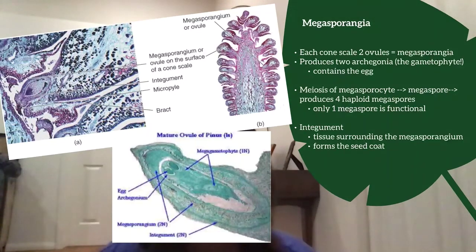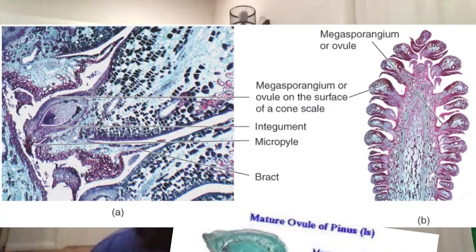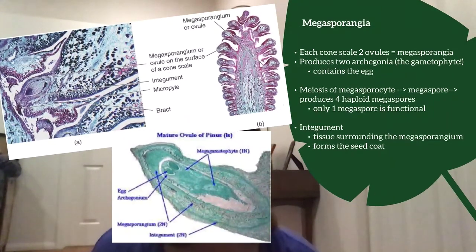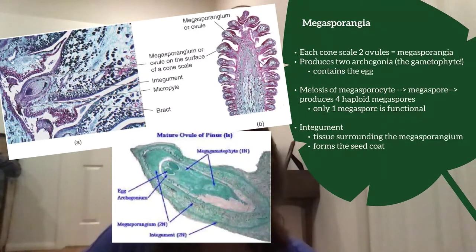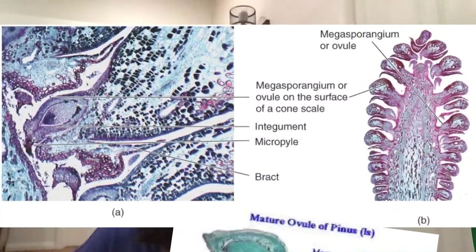In this close-up you can see the megasporangium — or ovule — on the surface. Follow the lines where the megasporangia are being pointed to. The ovule is the same term as megasporangium. There are many megasporangia all up and down the length of that cone. Within there, they produce two archegonia — that's the actual gametophyte — and it contains the egg being produced inside, right at the base of that megasporangium, as you can see in the close-up picture.